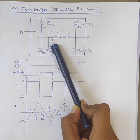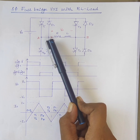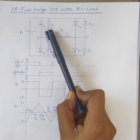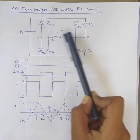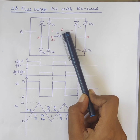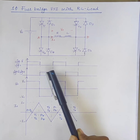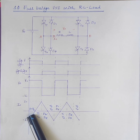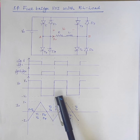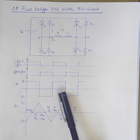The current direction from A to B is taken as positive, and the voltage polarity where A is positive with respect to B is taken as positive output voltage. The voltage and current waveforms of single phase bridge inverter with the RL load are shown here.